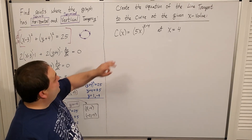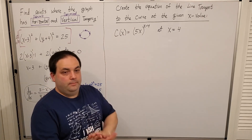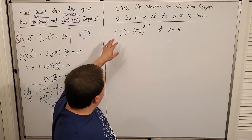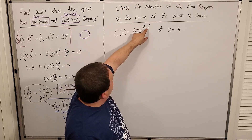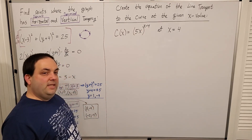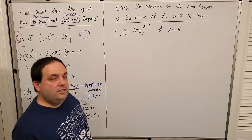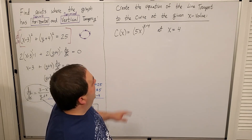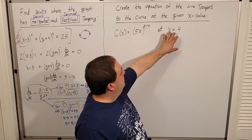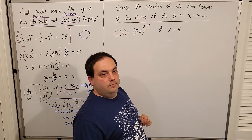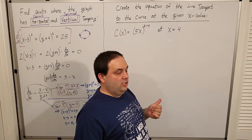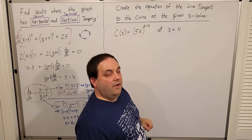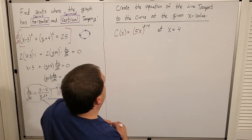Next, let's find the equation of a tangent line. But look at the function c(x) = (5x)^(x−4) — there's a variable in the base and a variable in the exponent. This isn't a simple basic rule; I'll need logarithmic differentiation. I have a particular point x = 4, and I need to create an equation of a line, for which I just need a slope and a point.